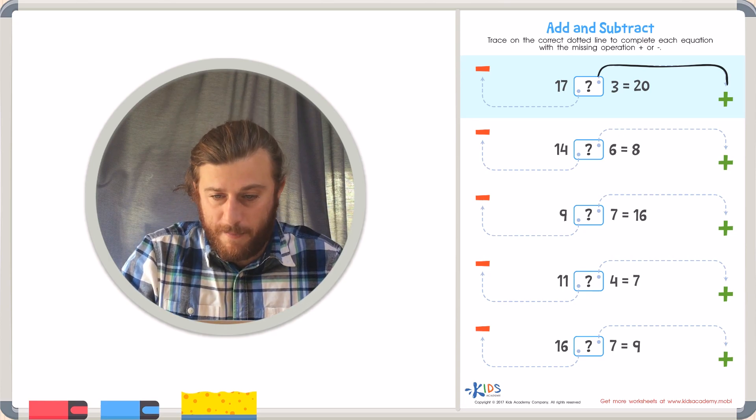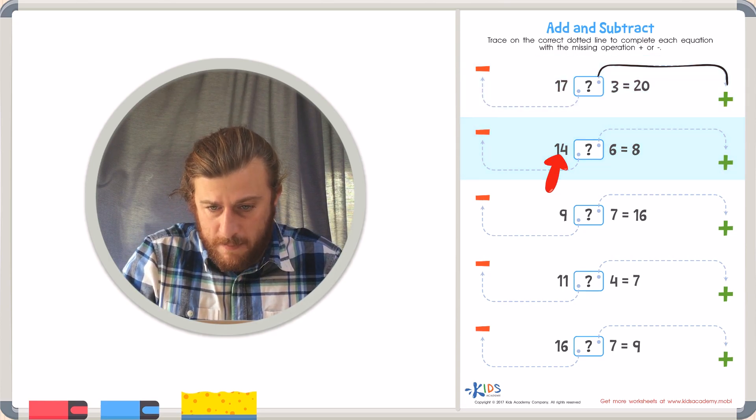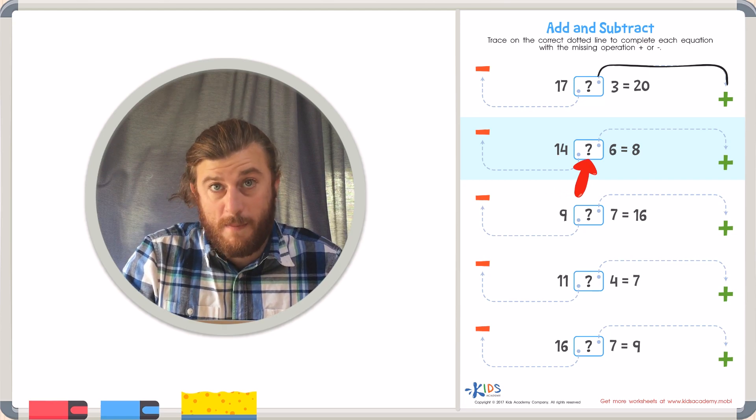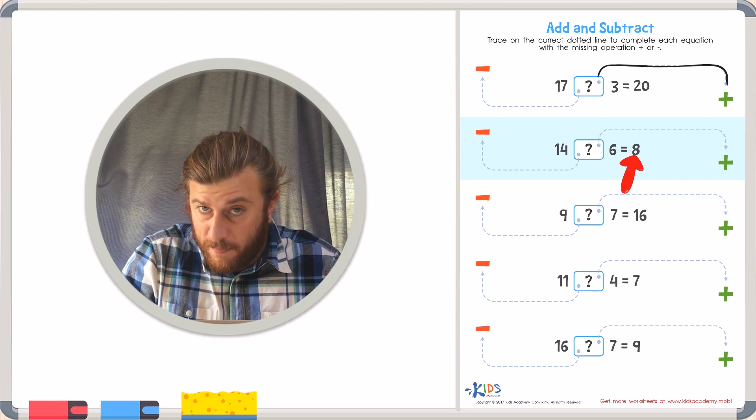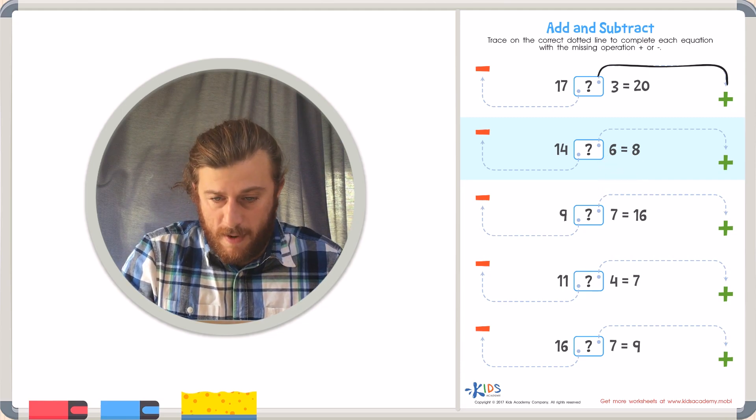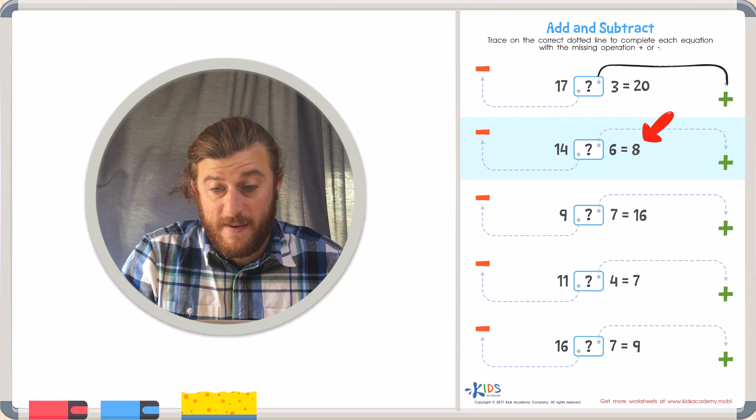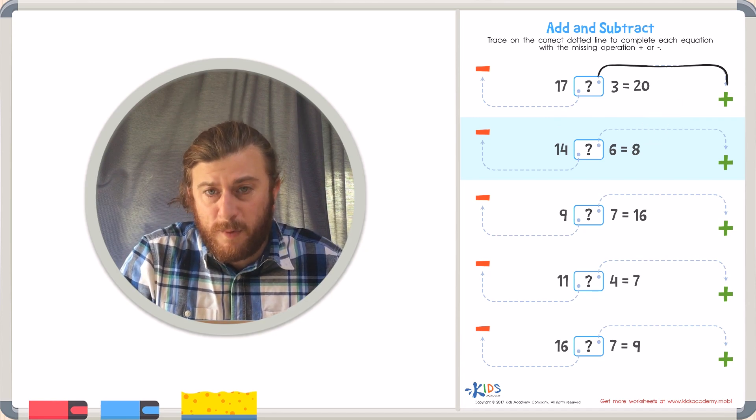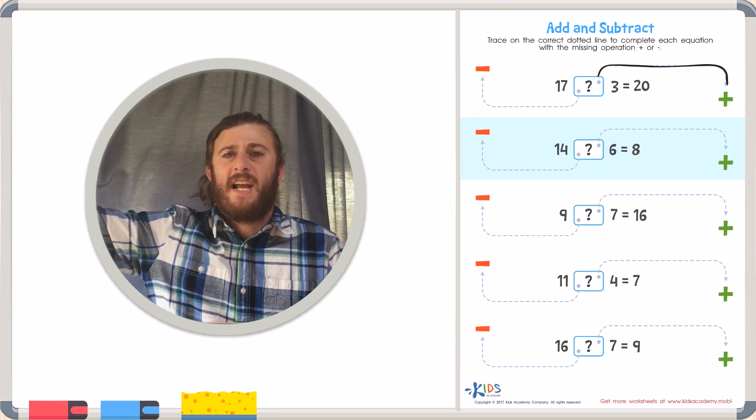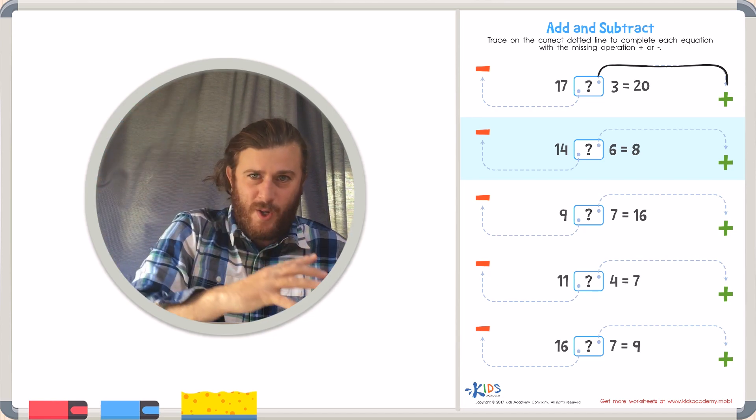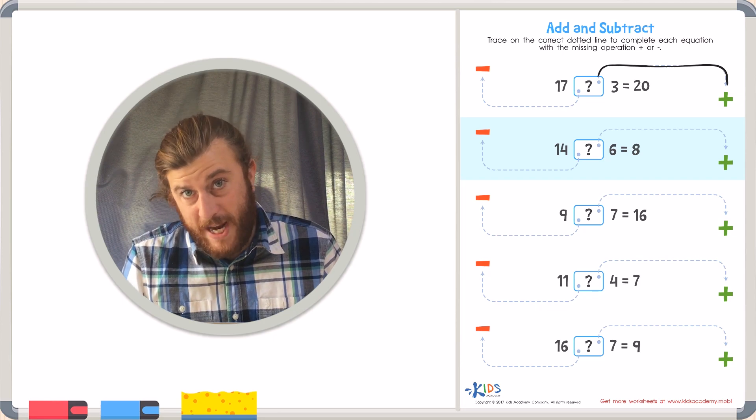Let's try our next problem. We have 14 plus or minus 6 equals 8. In this example our first number is 14 and our last number is 8. We all know that 14 is bigger than 8. So we have to take 14 and make it smaller because the answer is 8.